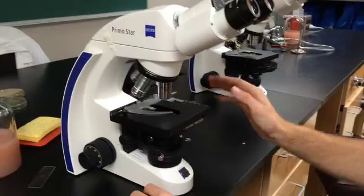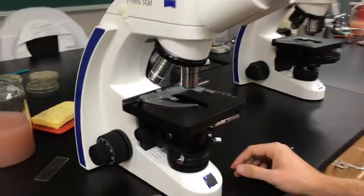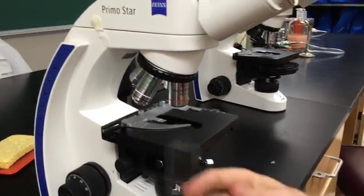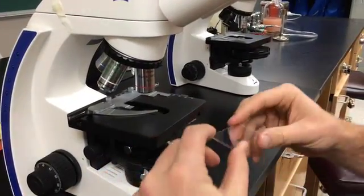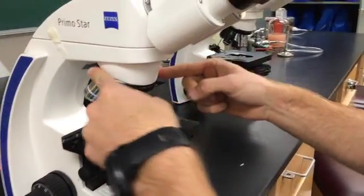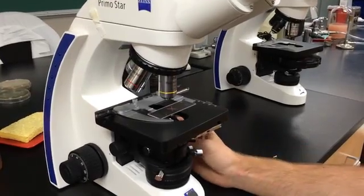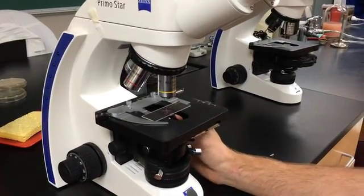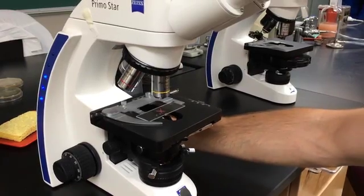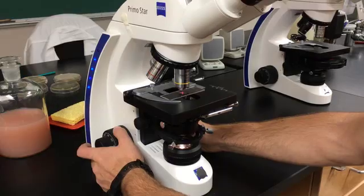So when you pull out the scope, the stage is all the way down and the lowest objective is in place. What you do at this point is you take your X wax slide or whatever you have, you put it in place, and you turn it to the 10X objective. We don't actually really work with the 4X objective at all. I'm going to center my X. I'm going to turn on my scope so that light is coming through. There's the light. And now I'm going to raise my stage all the way up.